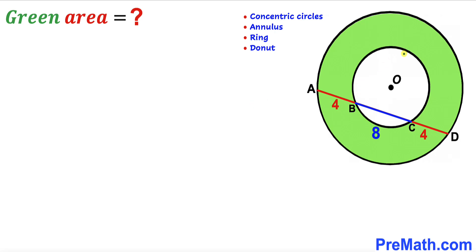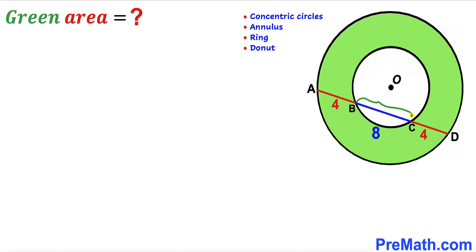Welcome to pre-math. In this video we have these two concentric circles that share the very same center O, such that we have this chord AD which has been divided into three parts. Segment AB is four units, segment CD is four units as well, and segment BC is eight units. Our task is to calculate the area of this green shaded region between the two circles.